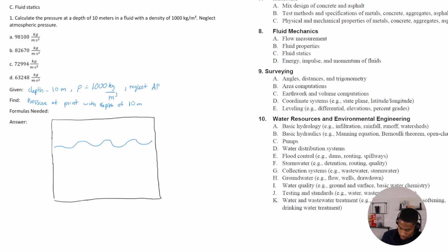And we are trying to find the pressure at this point. Here the distance from here to here is 10 meters, right? And we just want to find the pressure with that depth of 10 meters. And we know the density of this fluid is 1,000 kilograms per meter cubed.